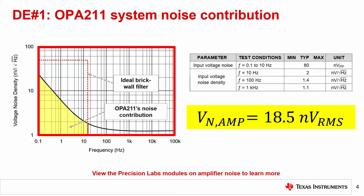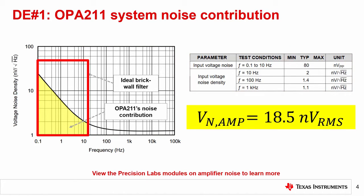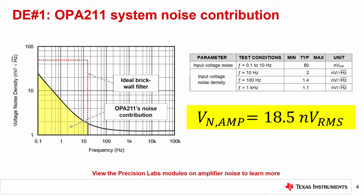Shown here on the left is the voltage noise density curve for the OPA211, while the table on the right shows its noise specifications. Note that the OPA211 has a sharp increase in voltage noise density under 10 Hz, known as 1/f or pink noise. Additionally, the OPA211 has a relatively flat region, known as broadband noise. In order to calculate the OPA211's noise contribution given a 16 Hz system effective noise bandwidth, you would need to integrate the area under the noise density curve up to the noise bandwidth. Using the methods from the Precision Labs modules on amplifier noise, you can calculate that the OPA211 contributes 18.5 nV RMS of noise to the system.